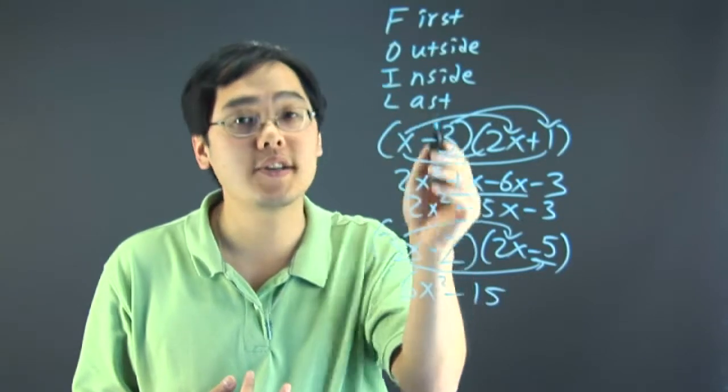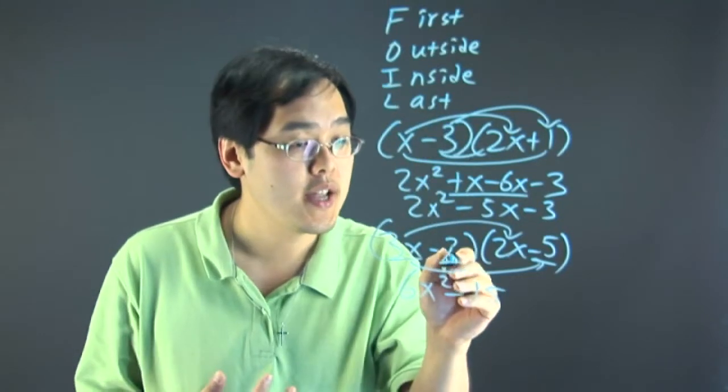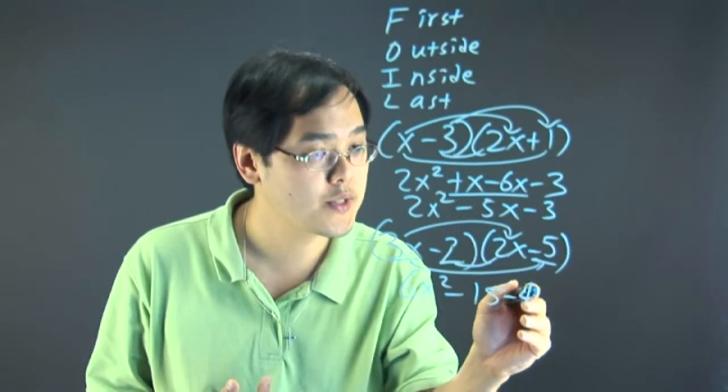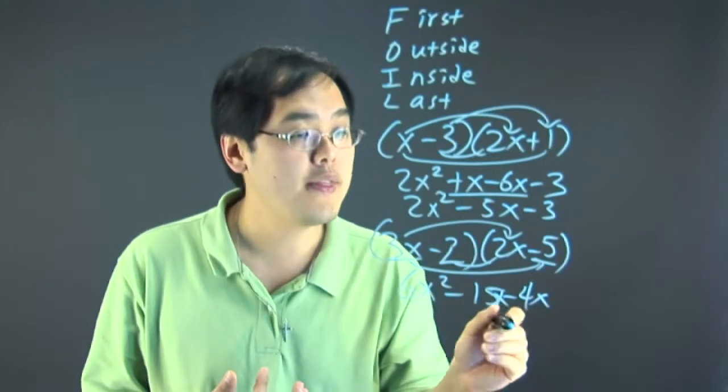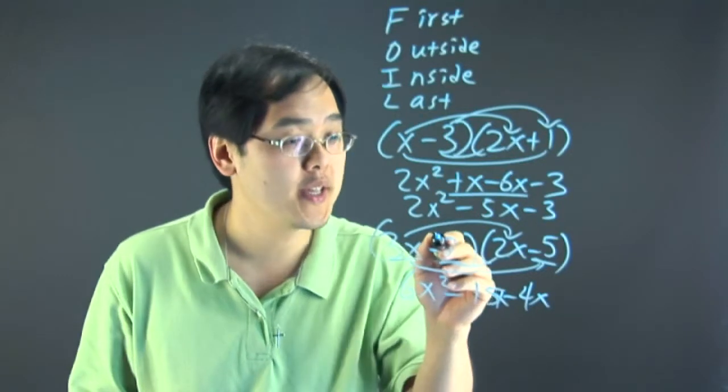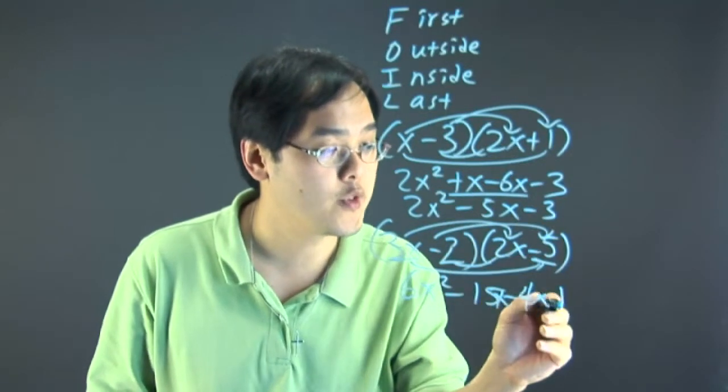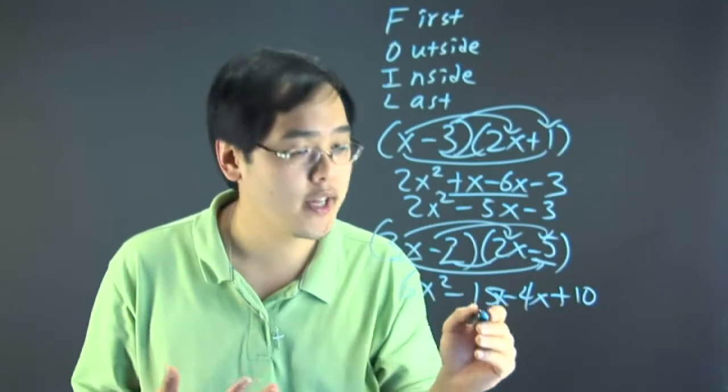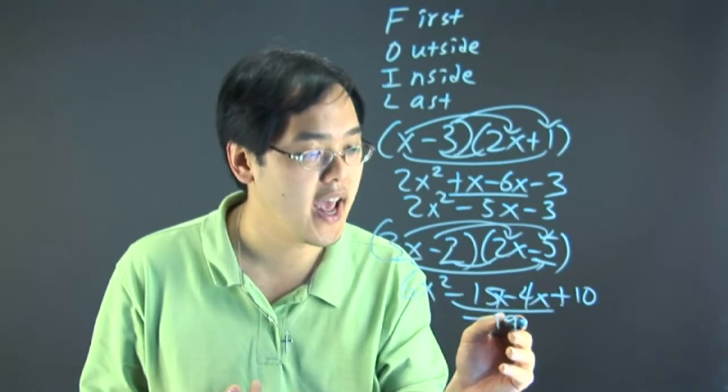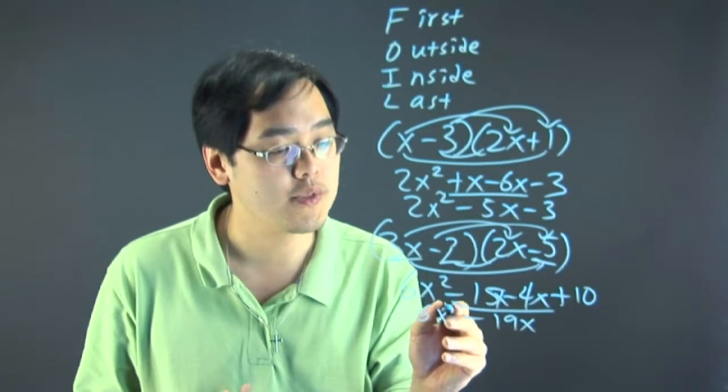And then the inside terms of both parentheses. Negative 2 times 2x, negative 4x. And then last but not least, you're going to multiply the last terms in each parentheses. Negative 2 times negative 5, which is positive 10. Combine the like terms, negative 15x minus 4x is negative 19x. And leave the other two terms as they are.